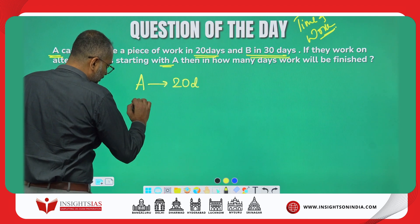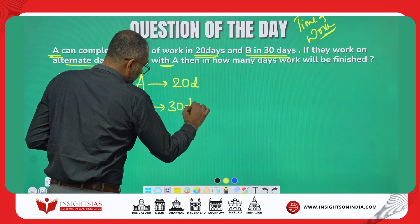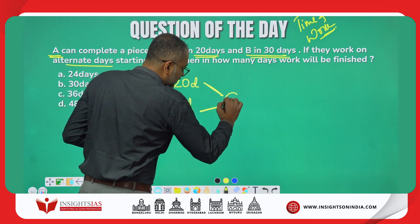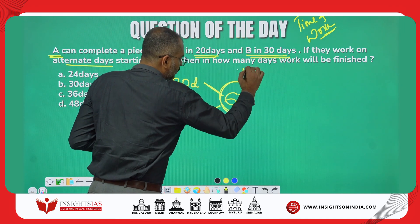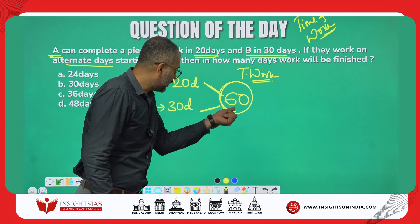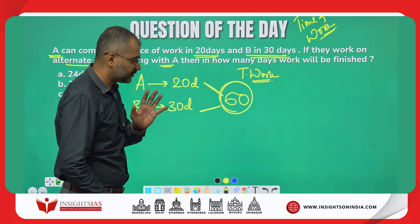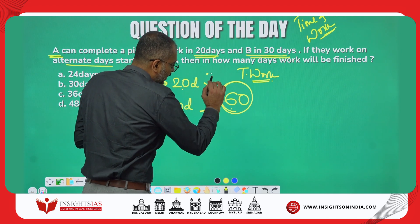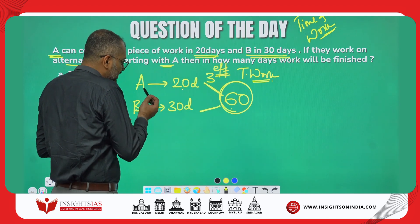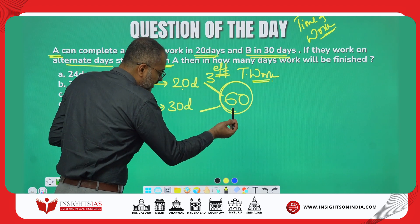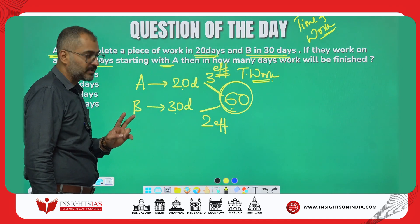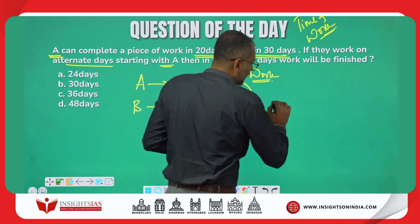Take the LCM of 20 and 30, which is 60. Assume 60 as the total work. A does 60 units in 20 days, so A's efficiency is 3 units per day. B does 60 units in 30 days, so B's efficiency is 2 units per day.